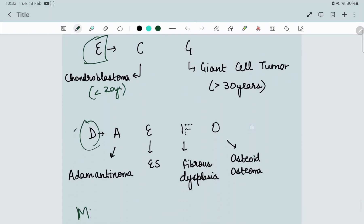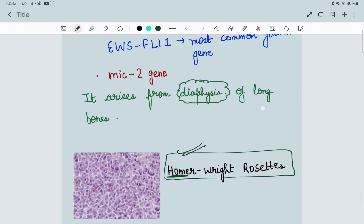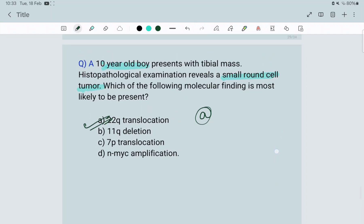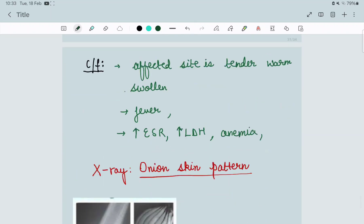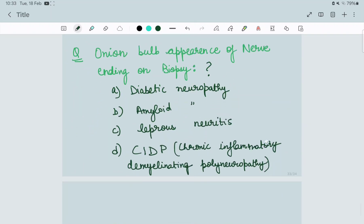In x-ray, onion skin pattern - this is the onion skin pattern which can be seen. After seeing this question on Ewing sarcoma, bone tumors is very commonly asked. One question will be asked in INICET, and this year also one question was asked from Ewing sarcoma only.